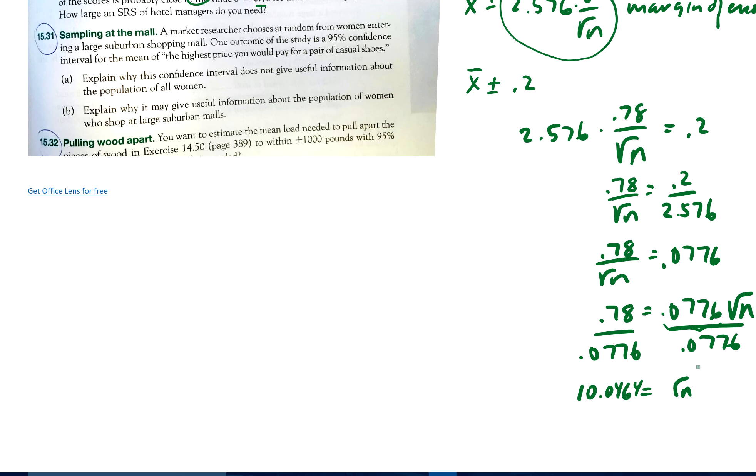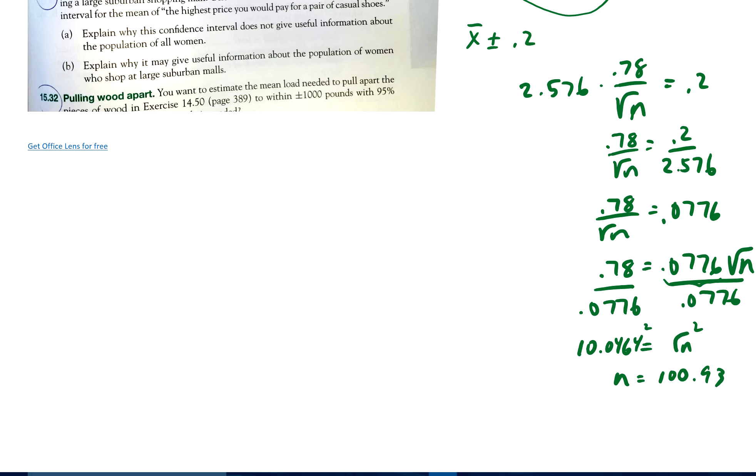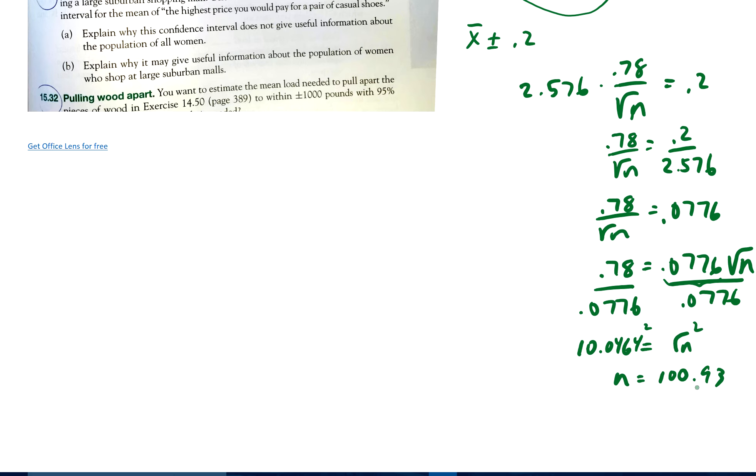And then I'm going to go ahead and square both sides. So N equals 100.93. So as long as N is larger than that, then this right here will be smaller than 0.2.